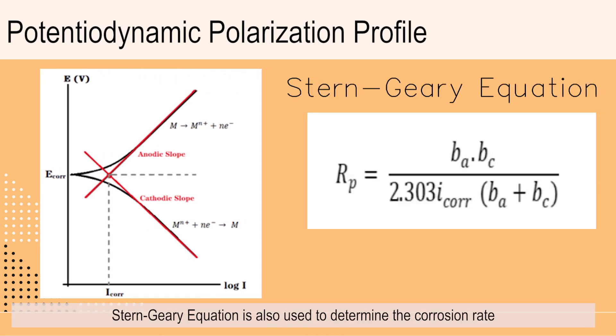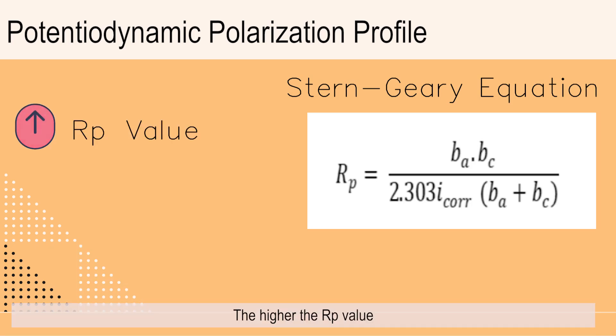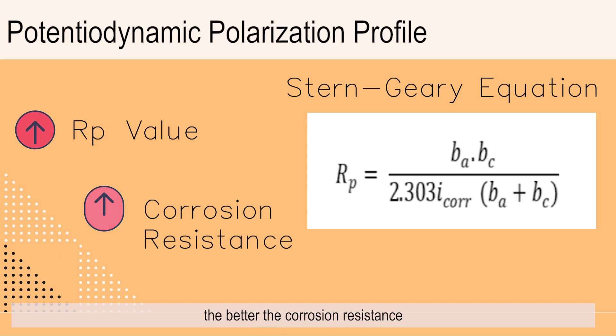Based on this curve, Stern-Gueri equation is also used to determine the corrosion rate. The higher the RP value, the better the corrosion resistance.